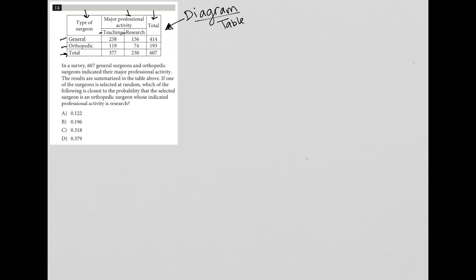So the question says, in a survey, 607 general surgeons and orthopedic surgeons, so that's where this 607 comes in, indicated their major professional activity, right? So we saw that, teaching and research. The results are summarized in the table above, which we already took a look at.